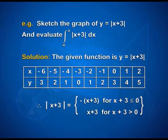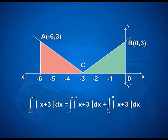Since |x+3| equals -(x+3) for x+3 ≤ 0, and (x+3) for x+3 > 0, we can see in the figure that coordinate A is (-6, 3) and B is (0, 3). Therefore the required integral from -6 to 0 of |x+3| dx is split as: integral from -6 to -3 of |x+3| dx, plus integral from -3 to 0 of |x+3| dx.